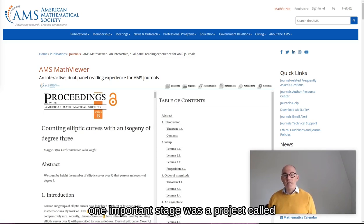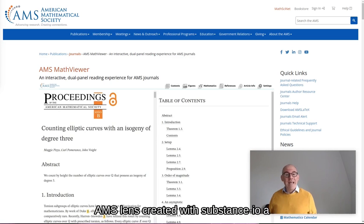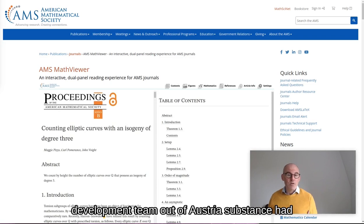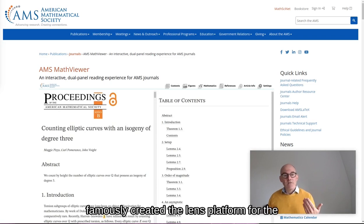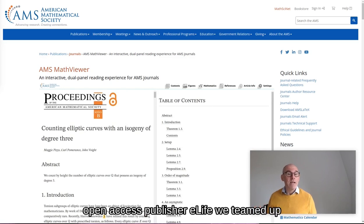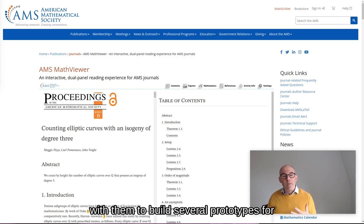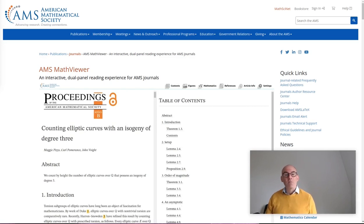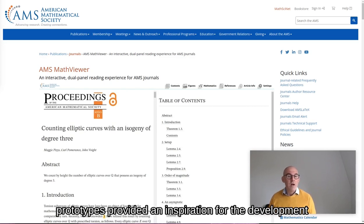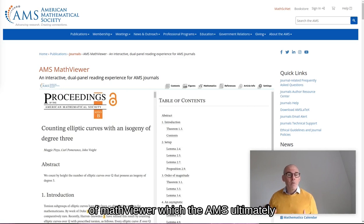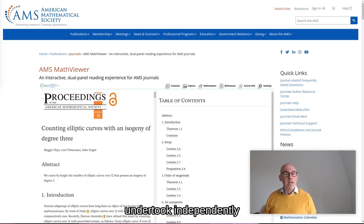One important stage was a project called AMS Lens created with Substance.io, a development team out of Austria. Substance had famously created the Lens platform for the open access publisher eLife. We teamed up with them to build several prototypes for AMS content. These prototypes provided an inspiration for the development of MathViewer, which the AMS ultimately undertook independently.